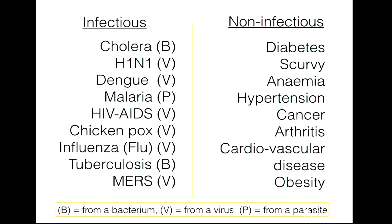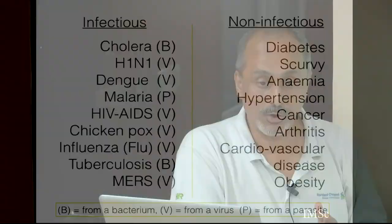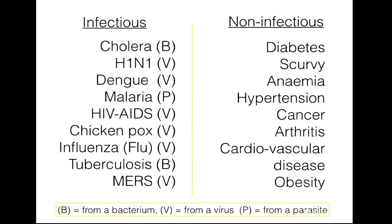Categorizing diseases: cholera is bacterial, H1N1 is viral, dengue is viral, malaria is parasitic, and HIV-AIDS is a viral infection. These can all be categorized as viral, bacterial, parasitic, or caused by worms or misfolded proteins. Non-infectious diseases include diabetes, which is a metabolic disease; scurvy, a deficiency disease; anemia; hypertension; cancer; arthritis; cardiovascular disease; and obesity. All of these cannot be transmitted from person to person and are consequences of genetic factors, lifestyle, and diet.